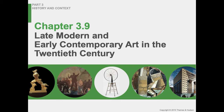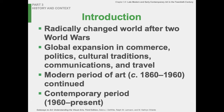We were already in modernism to a degree. Cézanne is definitely considered modernist, and the Impressionists are too, but not in the way we typically think of it. We think of modernism mainly as a 20th century phenomenon, but it really does start in 1860 — we have realism, photography, Impressionism, and Expressionism happening in the early 1900s. A lot is changing, with global expansion in commerce, politics, cultural traditions, communications, and travel — which is kind of the basis for World War I.